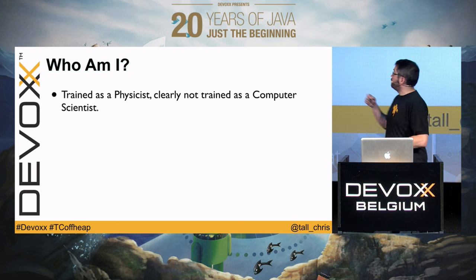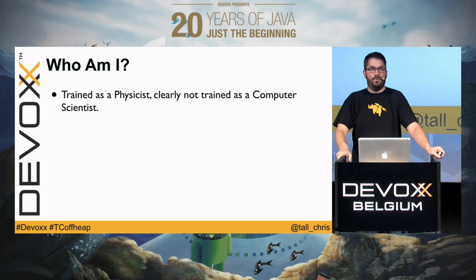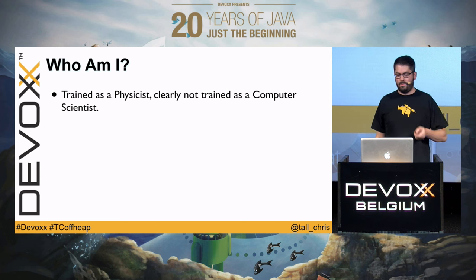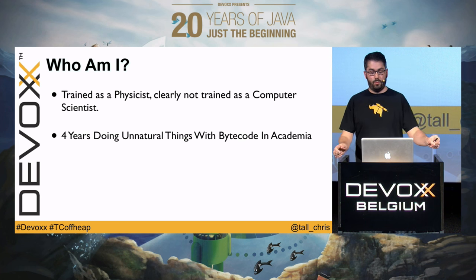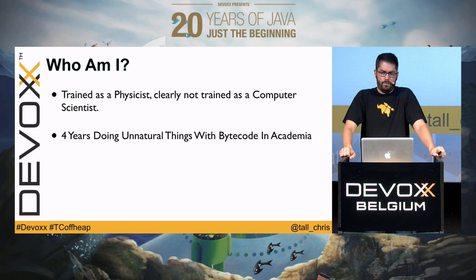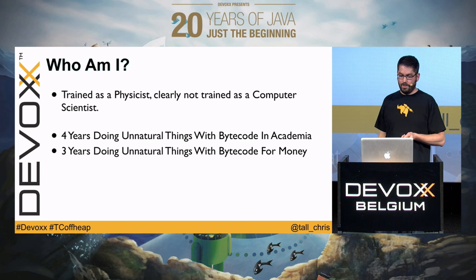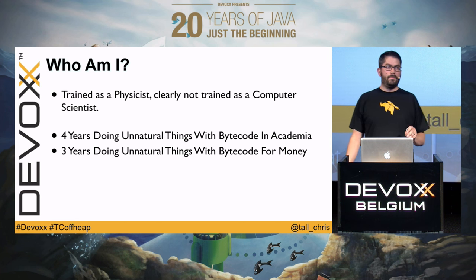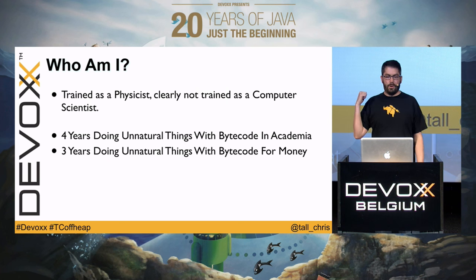I was trained as a physicist. After this talk it might be clear I wasn't trained as a computer scientist. We're going to attempt some really elementary computer science — 101 first-year stuff. I spent four years doing unnatural things with bytecode in academia. In a previous existence I wrote an x86 emulator in Java that did x86-to-bytecode translation. I then spent three years doing more weird things for Terracotta, which was famous for a product called DSO that tried — and sometimes succeeded — in clustering JVMs.